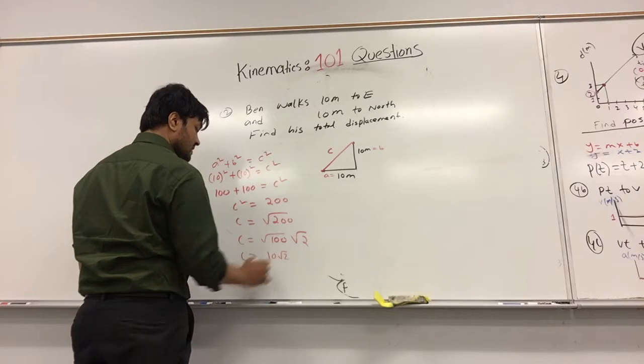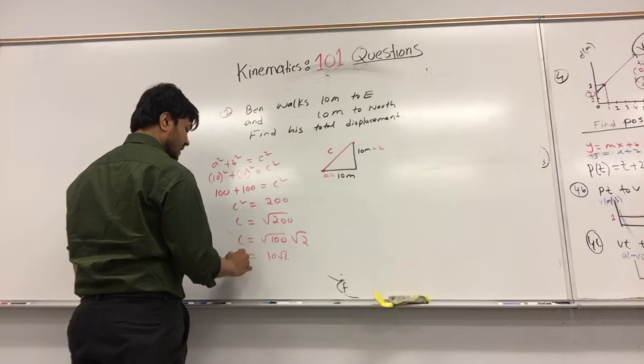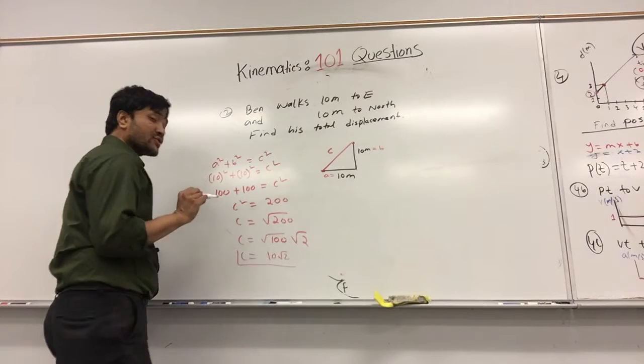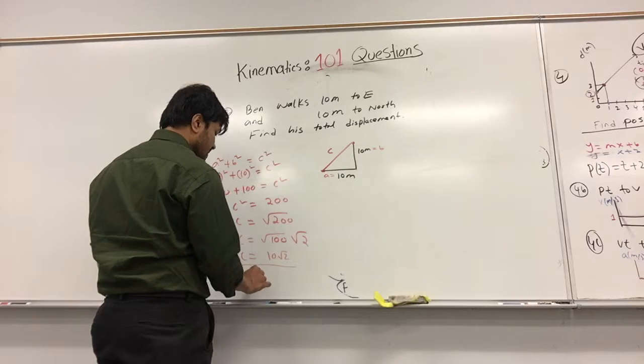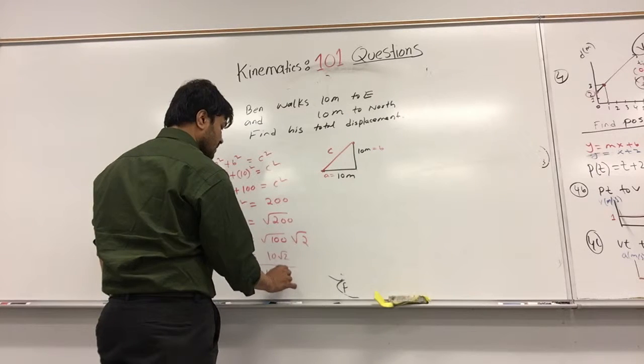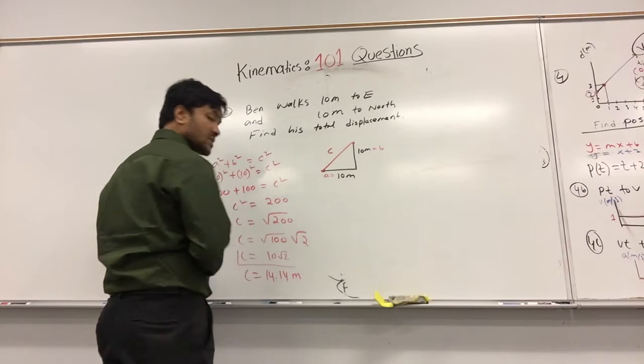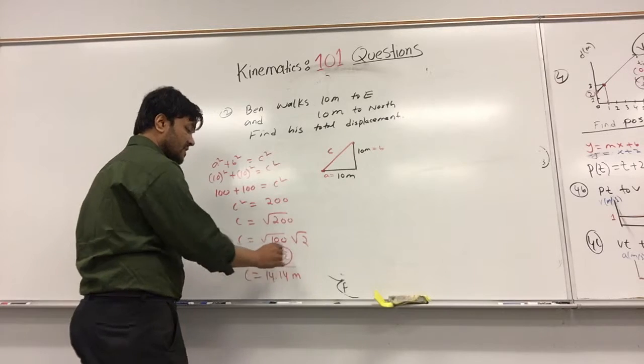It is 10 square root of 2. It's a convention to write it like that: 10√2, which is 14.14. You can write C equals 14.14 meters, or you can write 10√2.